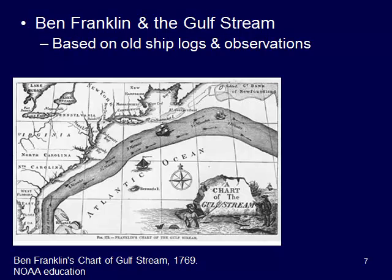Early information was gathered by Ben Franklin, who was the first to create a good map displaying the Gulf Stream, based on old ship logs and observations by captains. For a while, a lot of this information was kept secret by different captains traveling between Europe and the Americas — knowing where the currents were meant you could get there faster, and you didn't want to give that advantage to your competitors. Eventually Ben Franklin compiled all this information into the rough basic map you see here.